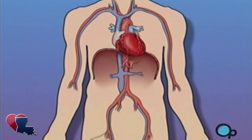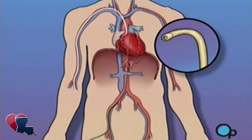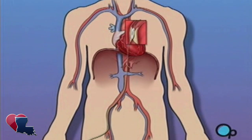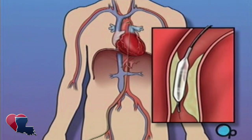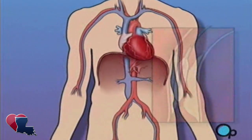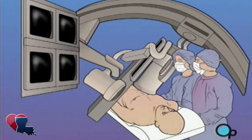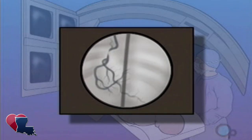During a balloon angioplasty, a heart specialist will insert a thin tube into an artery in your arm or leg and gently guide it towards the problem area in your heart. Once the tube is in place, a small balloon is briefly inflated in order to widen the narrowed artery. During and after the procedure, your doctor will take x-rays in order to monitor your progress.